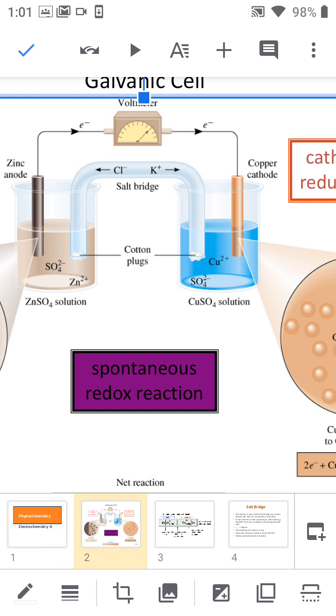We know that the cell is made up of two half cells. Only by clubbing these two half cells can the cell work. So in every cell, one electrode is acting as an anode and the other electrode is acting as a cathode.